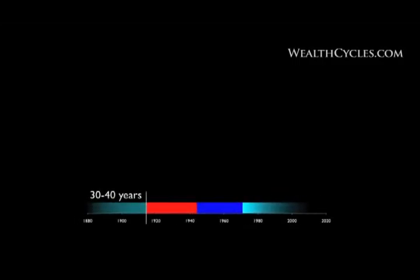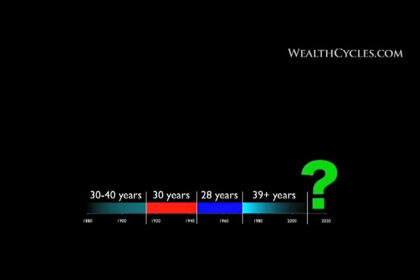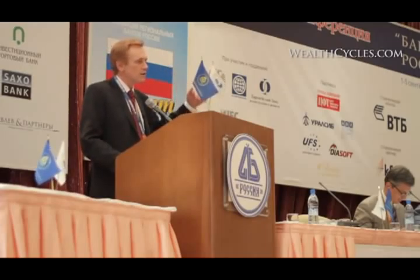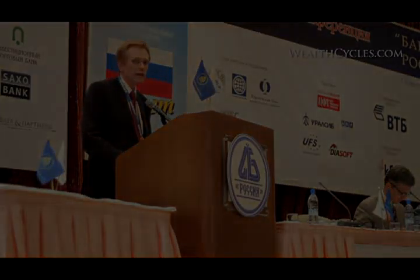So 30 years, 28 years, 39-plus years — what's next? The ruble has a crisis every now and then, and every currency on earth has. Why do you think the dollar is so stable? Why do you think the dollar isn't susceptible to a major currency crisis? I believe it is. I believe we're going into a new currency crisis. It's going to happen. We're going to a new monetary system — it's going to happen this decade.